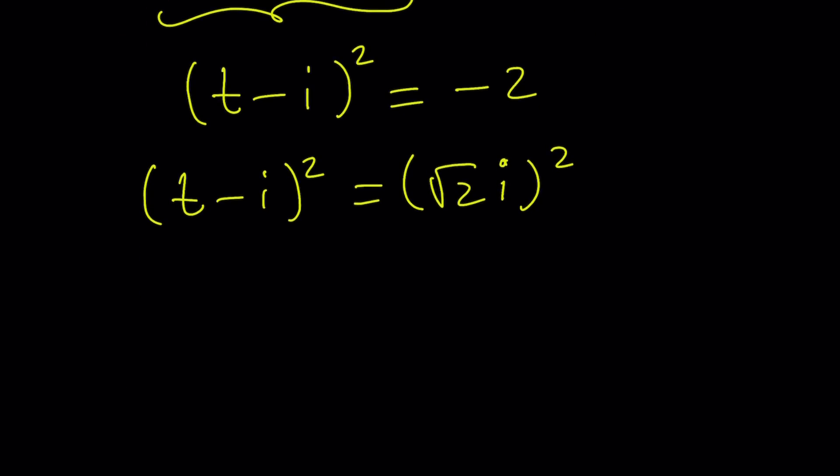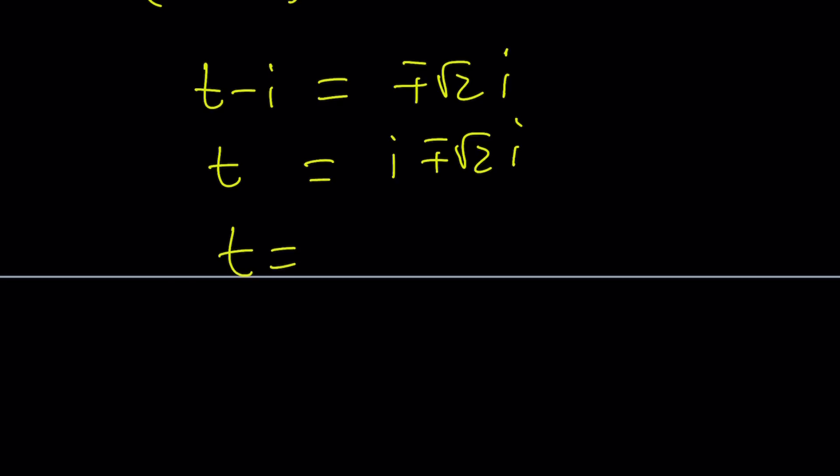Consider the plus minus signs. And you'll get the following. t minus i equals plus minus root 2i. And then put the i on the right. i plus minus root 2i. And from here, t equals 1 plus minus root 2 all multiplied by i. Notice that this is not the same thing as 1 plus minus root 2i. This is different. Okay?